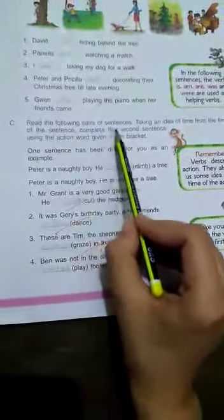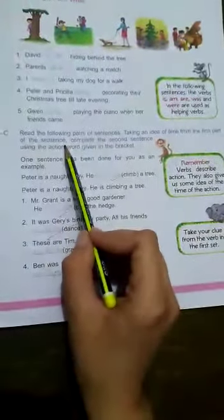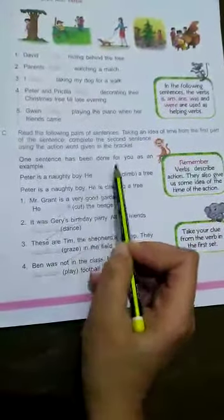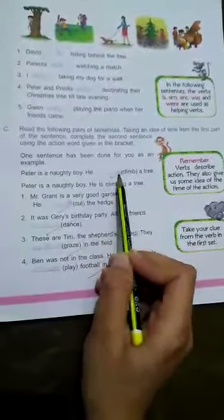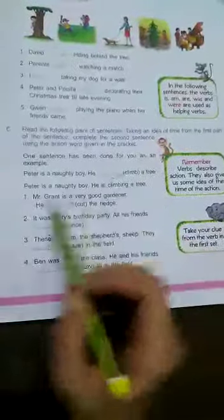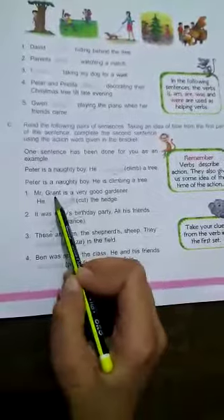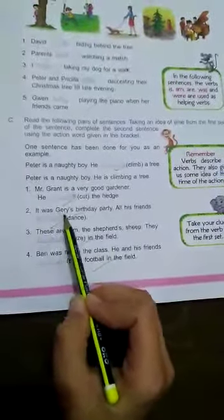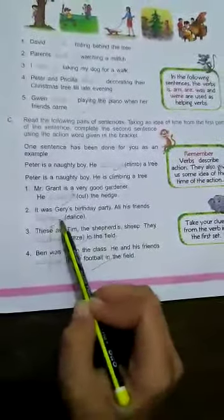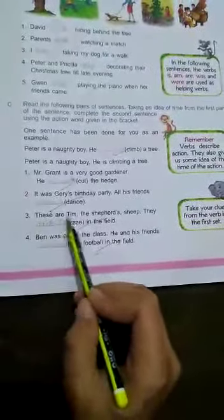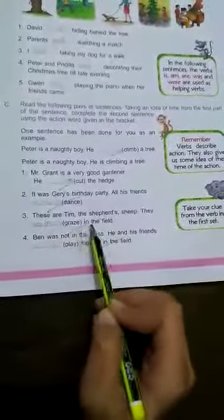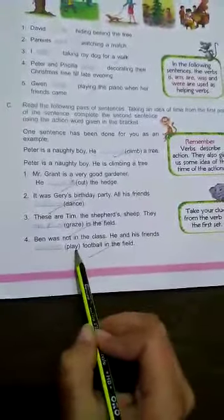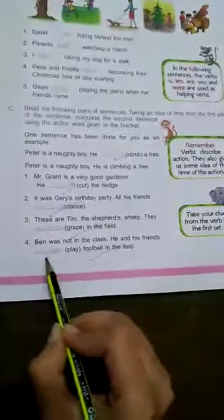Exercise C. Read the following pairs of sentences. Taking an idea of time from the first part of the sentence, complete the second sentence using the action word given in the bracket. For example, Peter is a naughty boy. He is climbing a tree. Climb will become is climbing. Number one, Mr. Grant is a very good gardener. He is cutting the hedge. Number two, it was Gray's birthday party. All his friends were dancing. Number three, these are Tim, the shepherd's sheep. They are grazing in the field. Number four, Ben was not in the class. He and his friends were playing football in the field.